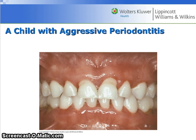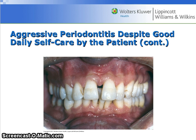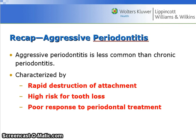This is an image of a child with aggressive periodontitis. Aggressive periodontitis despite good daily self-care by the patient is shown in this image of an adult, as well as another image of an adult who also has aggressive periodontitis despite good daily self-care. Aggressive periodontitis is less common than chronic periodontitis and is characterized by rapid destruction of attachment, high risk for tooth loss, and poor response to periodontal treatment.